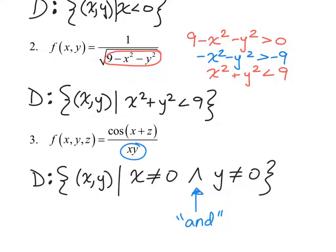This is the set notation symbol for 'and,' because if either of them are equal to zero, then this function is undefined. We know when we were talking about domains back in calc 1 that that kind of fed into the concept of a limit and then derivative. So this stuff is pretty important. So: x comma y comma z, such that x cannot be equal to zero and y cannot be equal to zero.